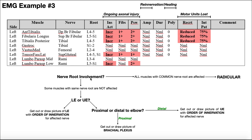And remember, if there's nerve root involvement, that means that we have a radiculopathy where the injury is at the nerve root level — whether it's chemical irritation, physical damage, or mechanical compression — it'd be a radiculopathy if there's nerve root involvement. So the first thing we're going to do is look at all the involved muscles.